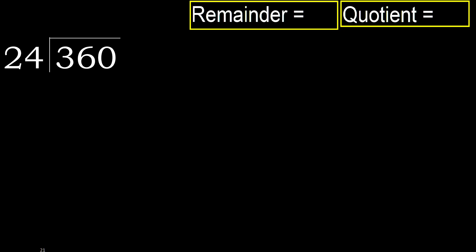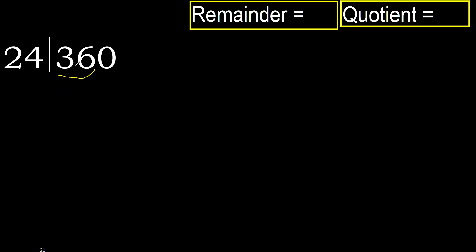360 divided by 24. 3 is less, therefore next — 36 is not less. Therefore, with 36: 24 multiplied by which number is nearest to 36 but not greater? 24 multiplied by 2 is 48.